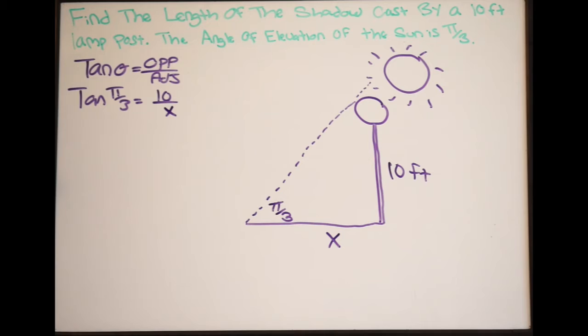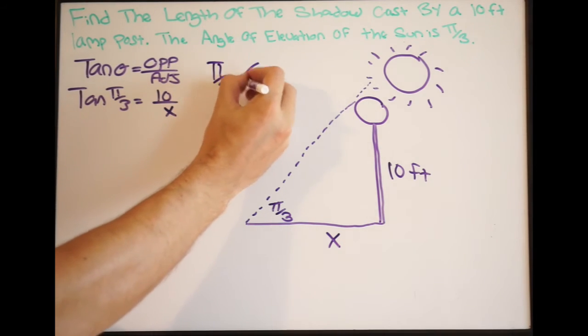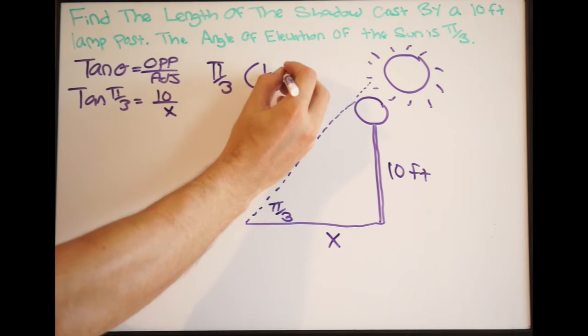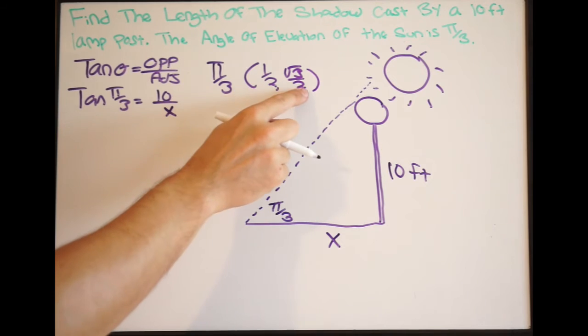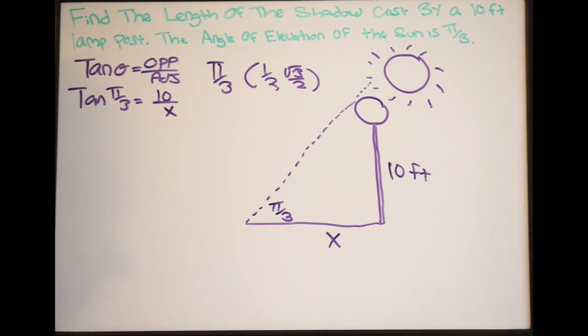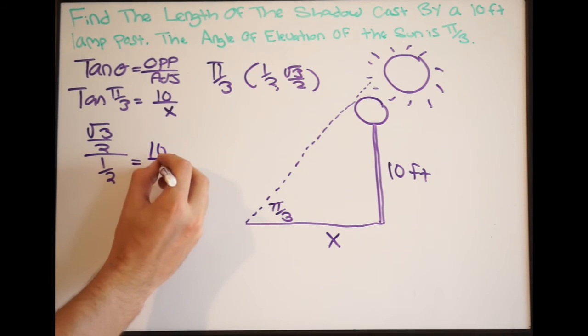Now, go back to the unit circle. At pi over 3, you're going to have the following values. You have a half and then the square root of 3 all over 2. Again, this is xy. We know that tangent is y over x. So we can replace what tangent of pi over 3 is going to be. It's going to be y over x, or in other words, the square root of 3 all over 2 over a half equal to 10 over x.